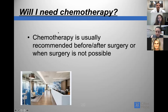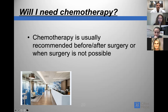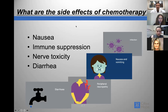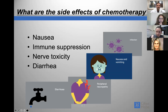Will I need chemotherapy? In most circumstances for bile duct and gallbladder cancer, yes. It is usually given before or after surgery, or when surgery is not possible. The main side effects include nausea, immune suppression which puts you at risk of infection, nerve toxicity or neuropathy causing tingling and numbness in fingers and toes, and diarrhea. These are all managed by the medical oncologist, and doses and treatment can be adjusted to minimize side effects.